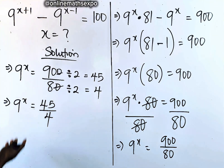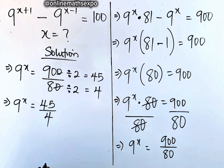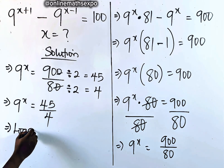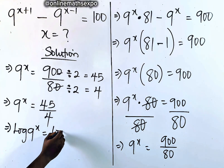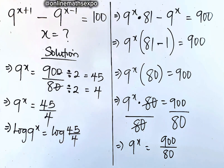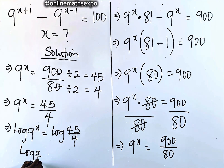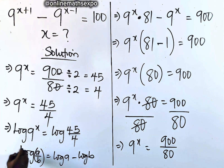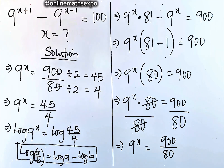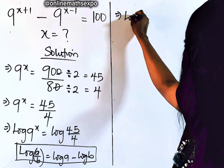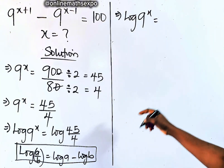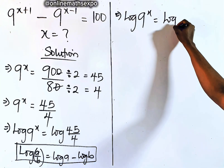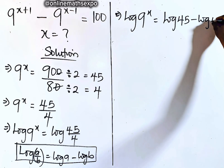We cannot express this as a simple power of 9 since the result is a fraction, so the easiest thing to do is take the log of both sides. We have log of 9 to the power of x is equal to log of 45 over 4. Remember for every log of a divided by b, it's always log of a minus log of b. Applying this on the right side gives us log of 9 to the power of x is equal to log of 45 minus log of 4.